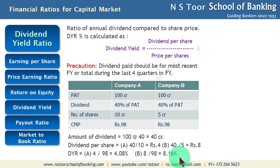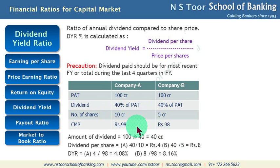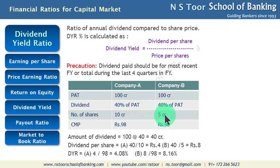What do we see here? For the same amount of profit, for the same amount of dividend, and for the same market price, the ratio can change depending upon the number of shares. Those companies having a lesser number of shares have a higher dividend yield ratio compared to those companies where the number of shares is greater.